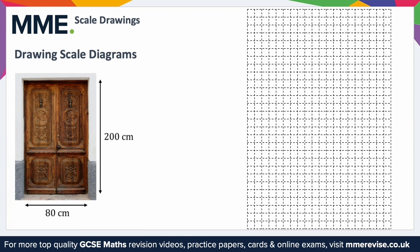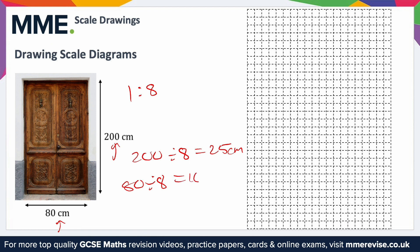You may be asked to draw a scale drawing based on actual dimensions. Here we have a door that is 200 centimetres tall and 80 centimetres wide, and we want to draw it at a scale of 1 to 8. The first step is to divide both dimensions by 8: 200 divided by 8 is 25 centimetres, and 80 divided by 8 is 10 centimetres.